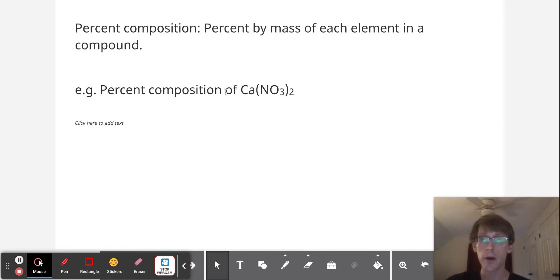What part of, for example, calcium nitrate is calcium per the whole mass of calcium nitrate? And what part is nitrogen per the whole calcium nitrate? The same for oxygen.